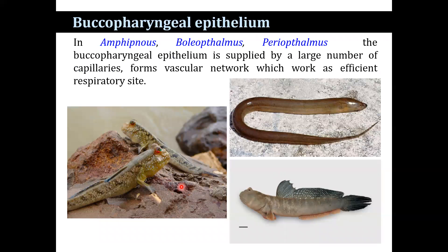Buccopharyngeal epithelium also serves as an accessory respiratory organ. In Amphibnous, Polyophthalmus, and Periophthalmus, the buccopharyngeal epithelium is supplied by a large number of capillaries that form a vascular network, which works as an efficient respiratory site. Mudskippers that leave water and spend most of their time skipping or walking about damp areas, particularly around the roots of mangrove trees. Fresh air is gulped into the cavity, and exchange of respiratory gases occurs through the epithelium.